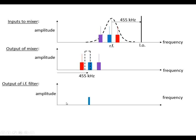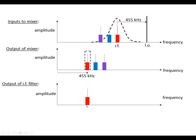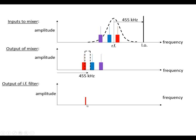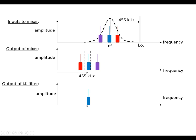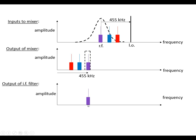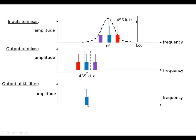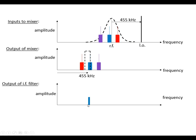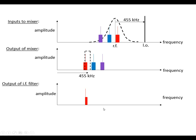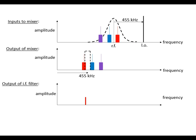Coming out of the intermediate frequency filter, we see that we either get one station coming out or we get nothing — so it's a very very selective filter. And that's the superhet receiver.